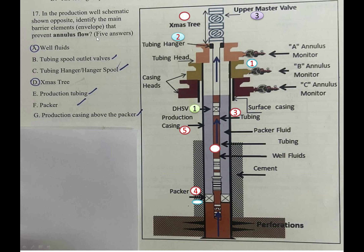هنا عندي مخطط بئر إنتاجي والمطلوب: حدد الـ barriers الرئيسية — Envelope — التي تمنع الجريان بالـ Annulus. أُعطينا سبع خيارات: الإجابات الصحيحة هي — أولاً Tubing Spool Outlet Valve، ثانياً Tubing Hanger/Hanger Spool، ثالثاً Production Tubing، رابعاً Packer، خامساً Production Casing Approved Packer. أما الإجابات غير الصحيحة فهي: الـ Well Fluids والـ Christmas Tree. إلى هنا تنتهي حلقتنا لهذا اليوم على أمل اللقاء في حلقات قادمة إن شاء الله.